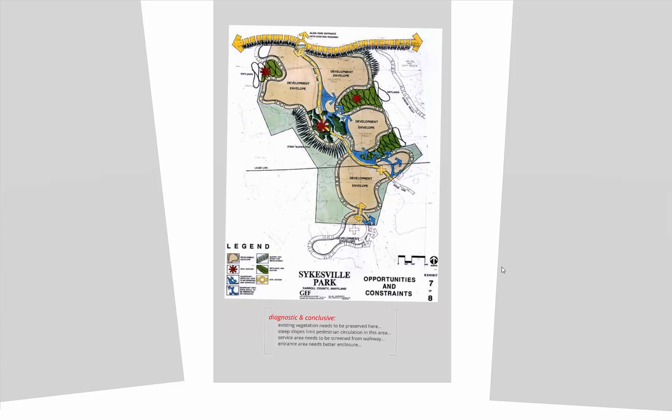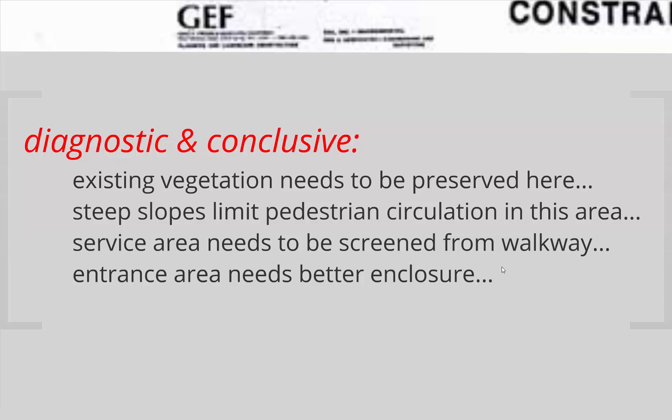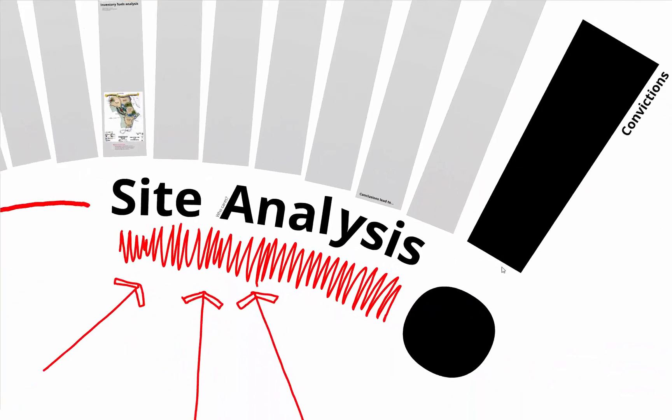Analysis also helps make sure your creative ideas are appropriate. Design is about being creative, but it's also about problem solving — if you come up with a brilliant design idea but it doesn't address the site issues, it won't work. When we get to analysis, we're really talking about being diagnostic and conclusive. Statements like: 'existing vegetation needs to be preserved here,' 'steep slopes limit pedestrian circulation,' 'service area needs to be screened from walkway,' 'entrance area needs better enclosure.'